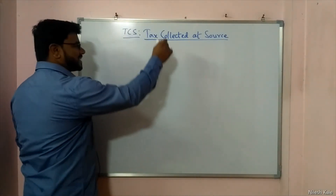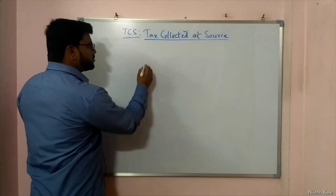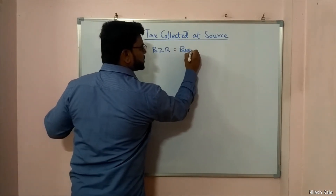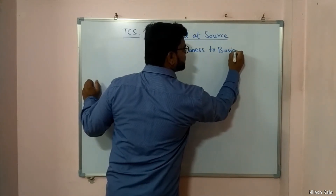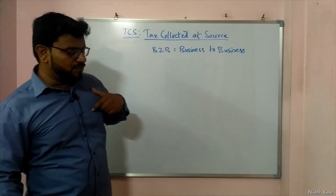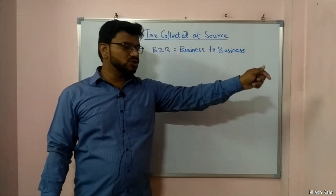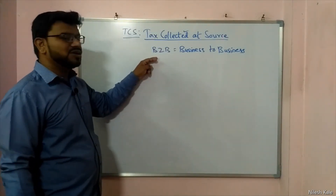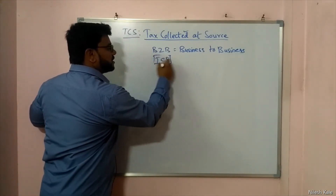Now, TCS is Tax Collected at Source — you are collecting taxes at source. There is a concept called B2B — business to business. Business to business means you are making transactions from one business to another business where the other party is not the final recipient or final consumer. If you are making any B2B transaction, that is where TCS comes into the picture.